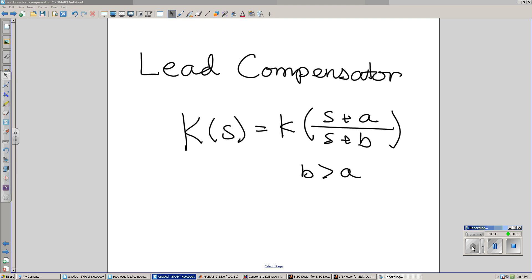A compensator that does that is the lead compensator. The general form of a lead compensator is add a zero anywhere you want, add a pole that's bigger than the zero, and a gain K.